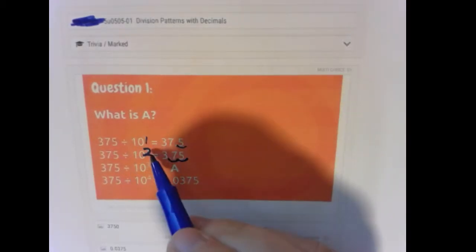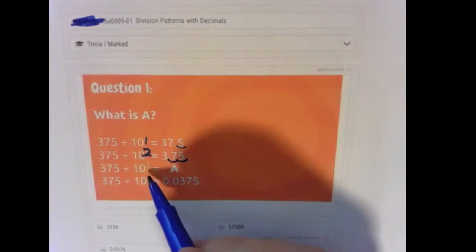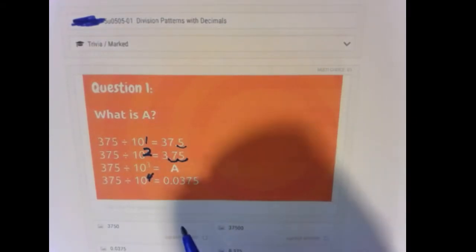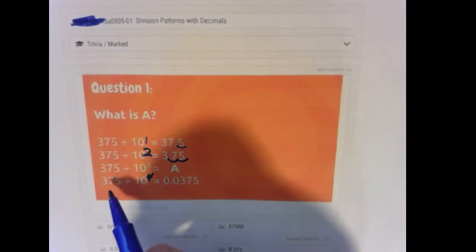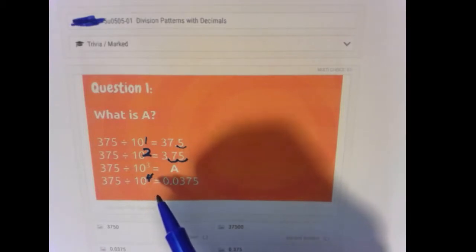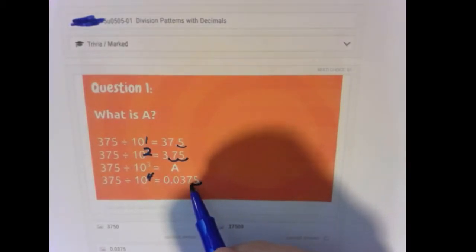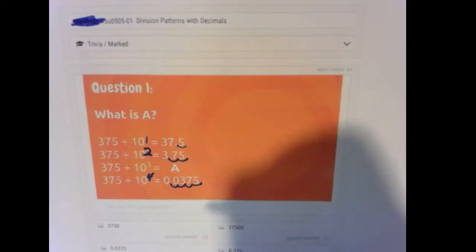As in, like 10 to the second power, we're moving the decimal two spots. Down here with 10 to the fourth, when we do 375 divided by 10 to the fourth power, we're moving the decimal one, two, three, four spots.